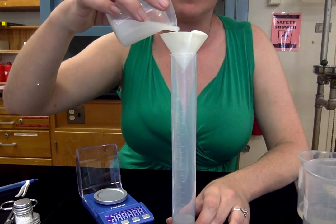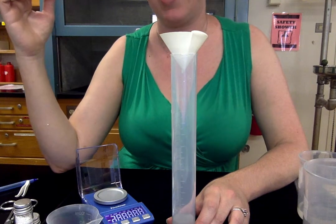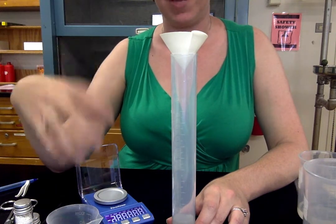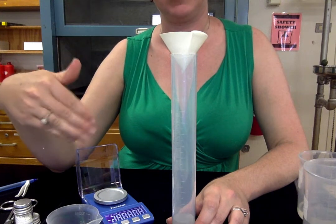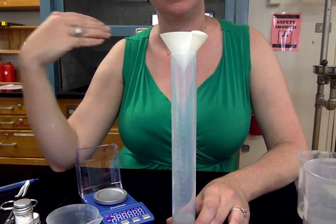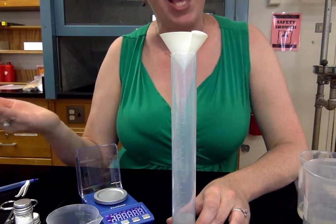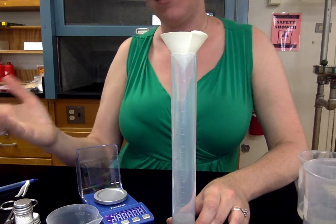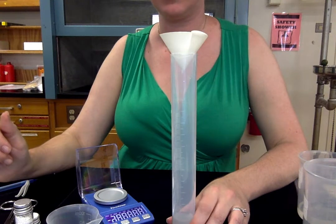So once it is completely dry in 24 to 48 hours, you'll take the mass. In fact, you'll mass it several times to make sure that you get it when it's completely dry. So when the mass is no longer changing, you know it is completely dry. And that is your actual yield. And you'll compare that in your calculations to your theoretical yield.